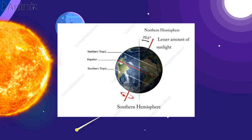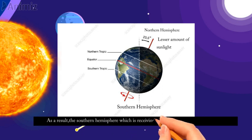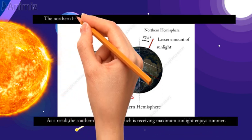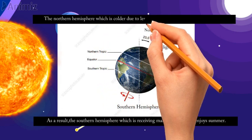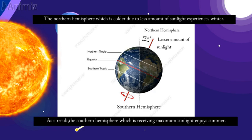And the northern hemisphere is receiving a lesser amount of sunlight as it is tilted away from the sun. As a result, the southern hemisphere which is receiving maximum sunlight enjoys summer season. While the northern hemisphere which is colder due to less amount of sunlight experiences winter season.